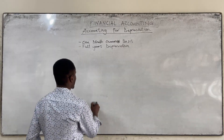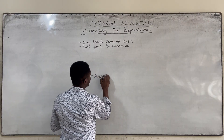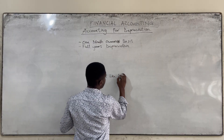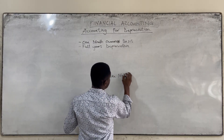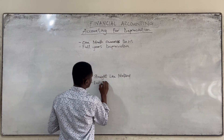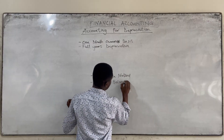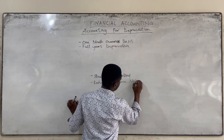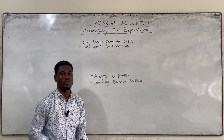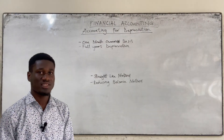We also have to know the methods of depreciation: straight line method and reducing balance. We are going to focus on these two. For straight line, the same depreciation is charged over the years.